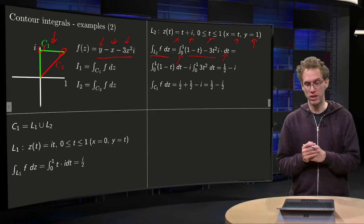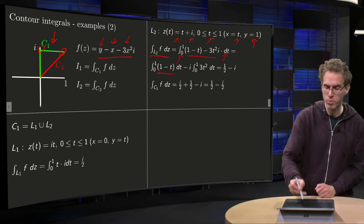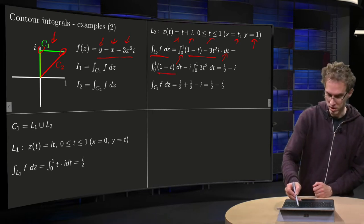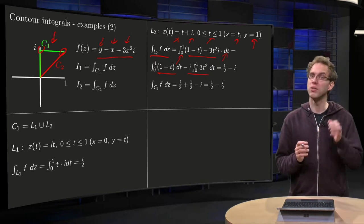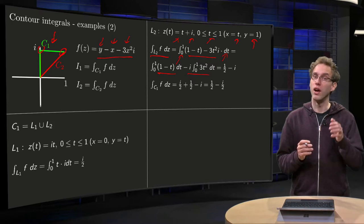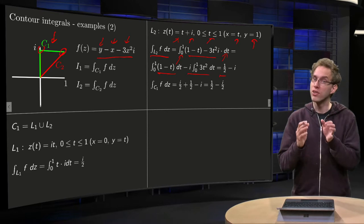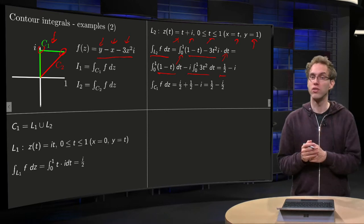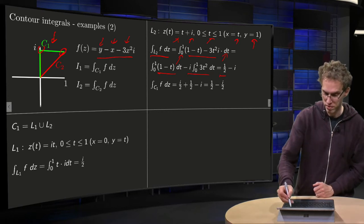And then you just have to integrate with respect to t. Split up the imaginary part, so integral 1 minus t dt minus i times 3t squared dt. So if you integrate 1 minus t, you get t minus one-half t squared, which gives you 1 minus one-half equals one-half, and 3t squared, if you integrate, you get t cubed between 0 and 1, gives you 1, so you're left with a factor minus i.